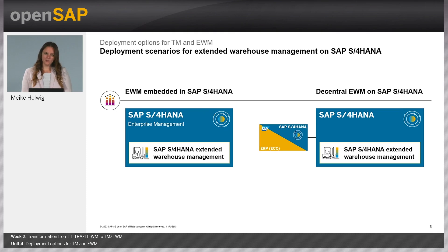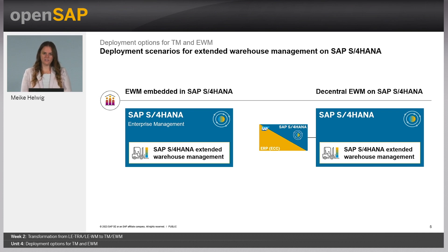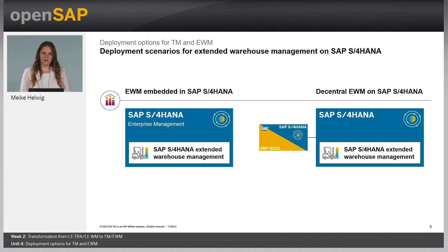Looking now at EWM, we have the same deployment options. You have the Decentral EWM system, which runs alongside an S/4HANA system — this is also the original deployment option for EWM, coming from the NetWeaver stack that was next to an ERP system. Now with S/4HANA, we have a second deployment option where EWM is embedded in the S/4HANA core.